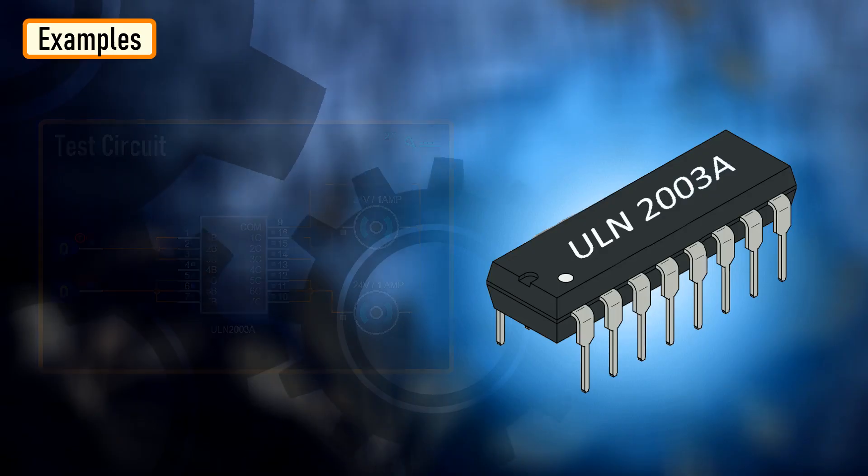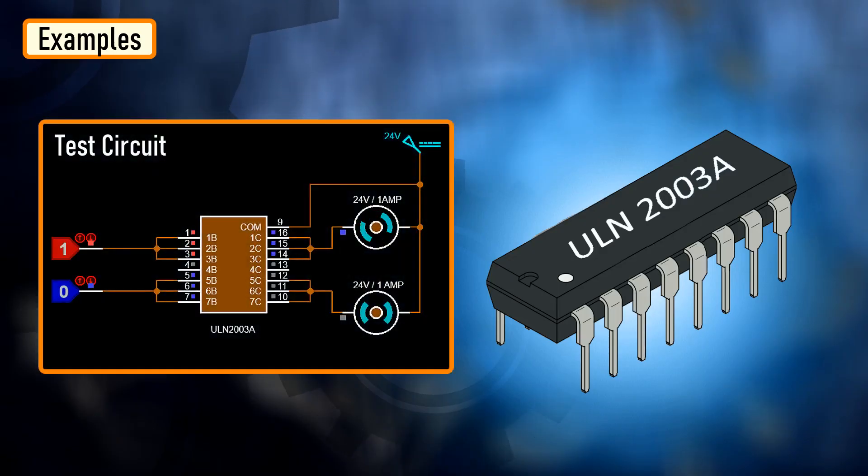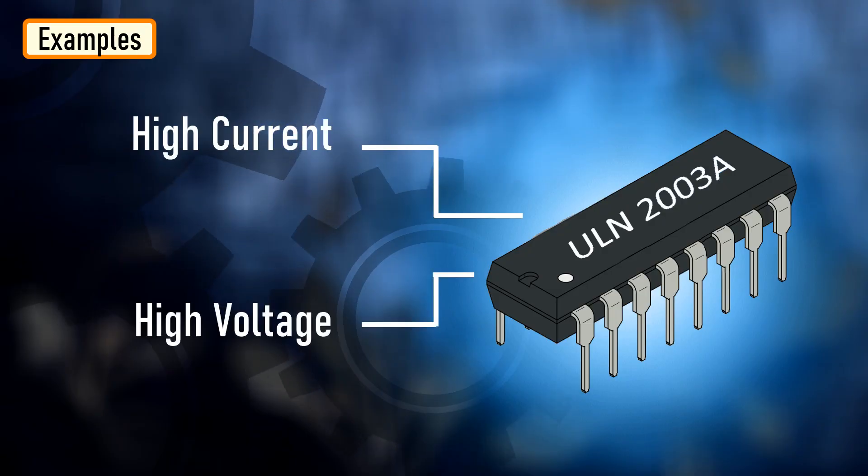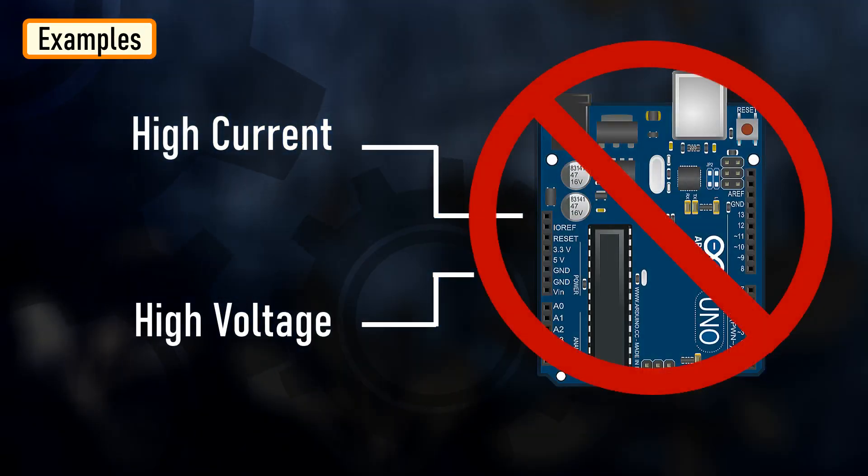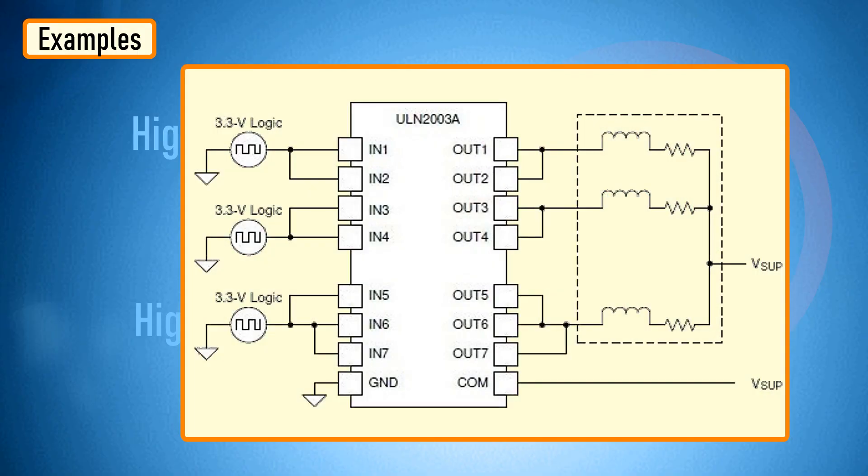Now, let's hook this IC to a circuit. As we know, ULN 2003 IC can easily drive a high current or high voltage or both devices which a microcontroller or a logic device cannot tolerate. Hence, they are widely used in driving inductive loads like motors, solenoids and relays.